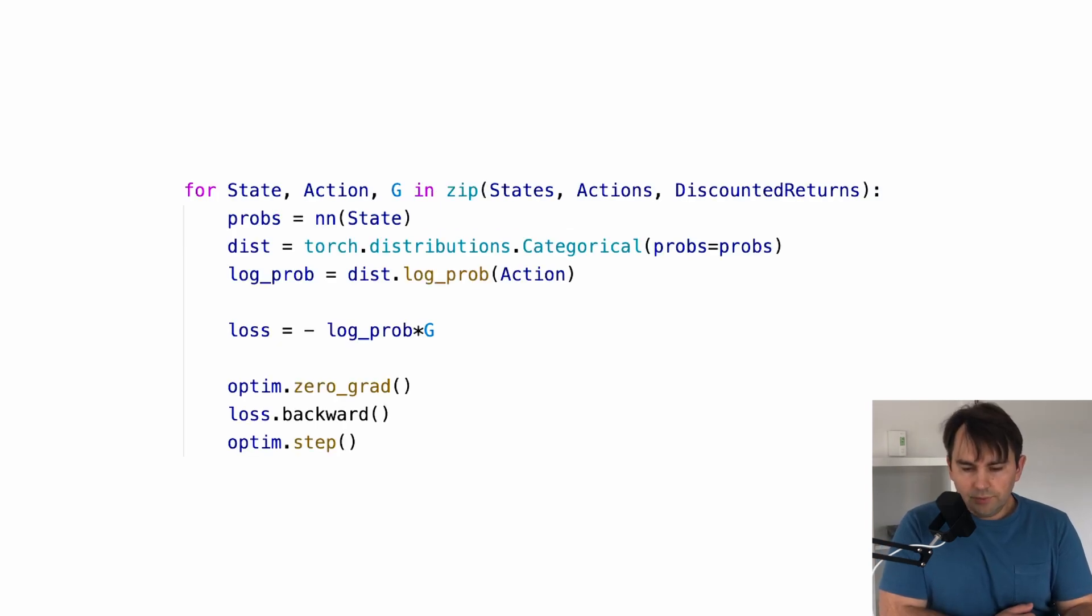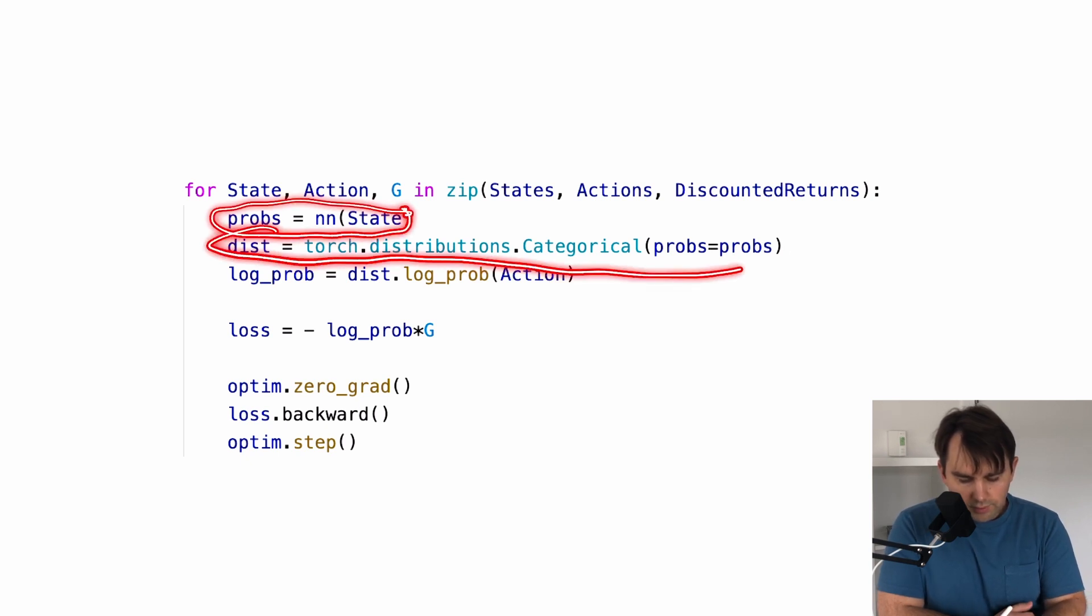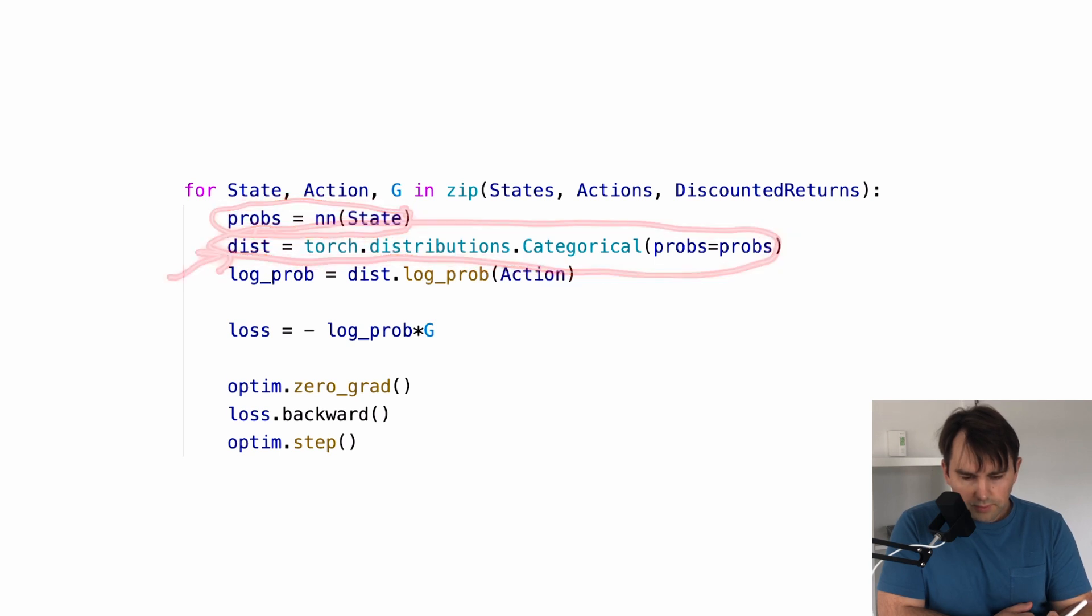After we computed our discounted returns, we iterate over the episode again and update our policy at every step. For this, we get our distribution from a neural network by using our Categorical class from Torch, and then use it to evaluate our actions. This gives us this log_prob term, which we will use to multiply by our discounted return G. And this gives us our loss. Notice that since in REINFORCE we want to increase this product, but gradient descent wants to decrease it, we need to put a negative sign in front of it. This way the negative of this will be made larger. We finish by letting our optimizer take a small step in the direction of our policy gradient.